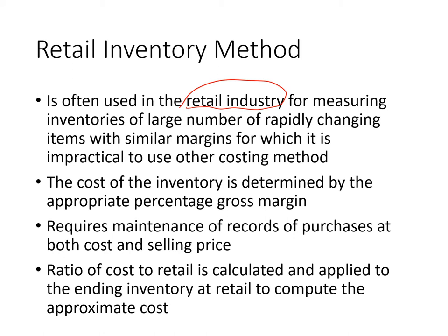The ratio of goods available for sale at cost divided by goods available for sale at retail is calculated and applied to the ending inventory at retail to compute the approximate cost. We say 'average' because we consider markup, markdown, markup cancellation, etc.